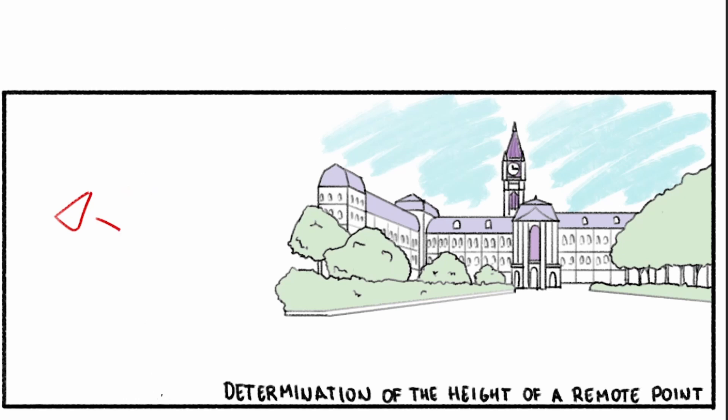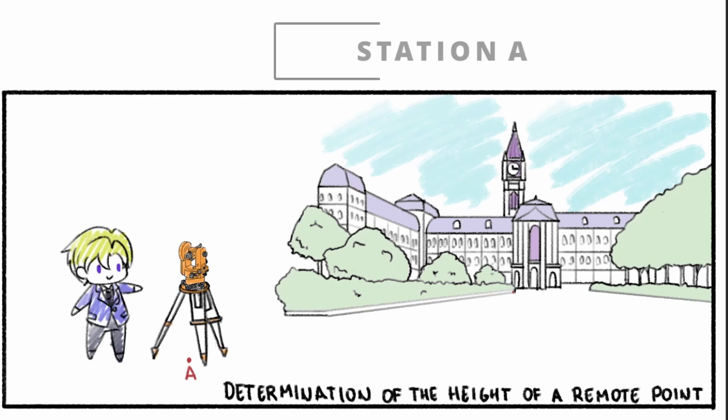So the first thing to do is to set up the theodolite at a convenient location and call it Station A, where one can see clearly the topmost part of the tower.